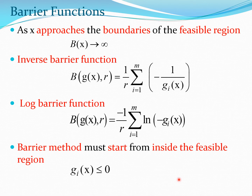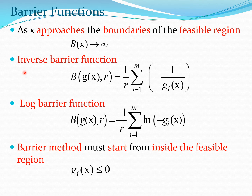Let us look at some typical barrier functions. One key property is that as you approach the boundary of the feasible region, the barrier function should become very large — in the limit, infinite. Two common barrier functions are the inverse barrier function and the log barrier function. In both cases, there is a singularity at g(x) = 0 which causes these functions to blow up at that point, while remaining well-behaved elsewhere.